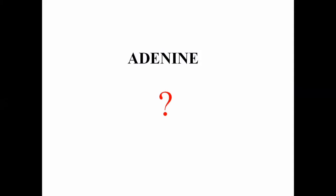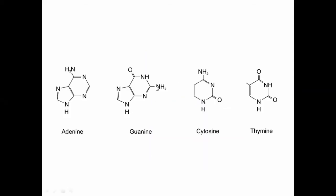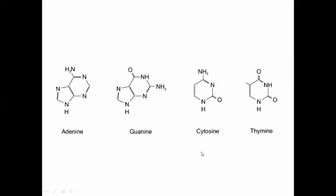Now, what is adenine? Adenine is one of the nitrogenous bases. This is the structure of adenine. Adenine is also known as 6-aminopurine because it has an amino group at the 6th position, and at the 9th position, when it is involved in the formation of a nucleotide, the ribose group will be attached. Adenine is the nitrogenous base, and there are 4 nitrogenous bases involved in DNA. Adenine and guanine are known as purines and have a double ring structure.